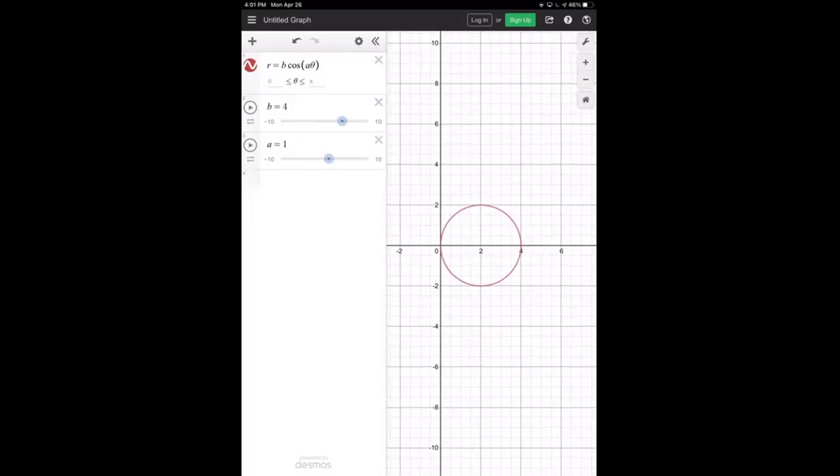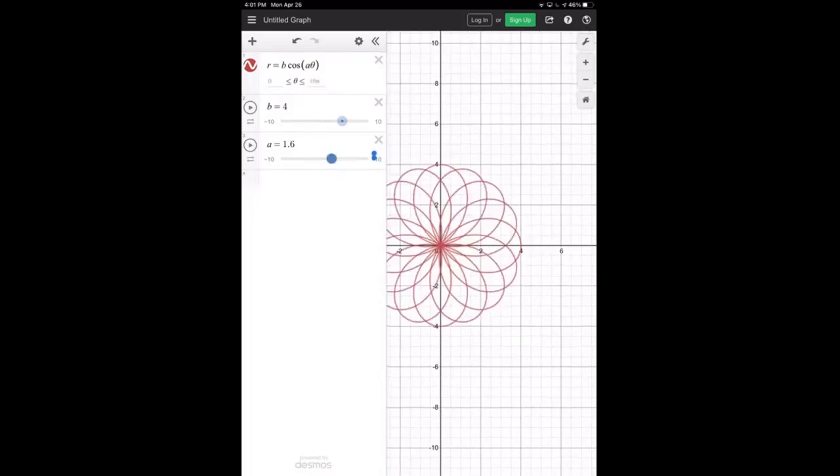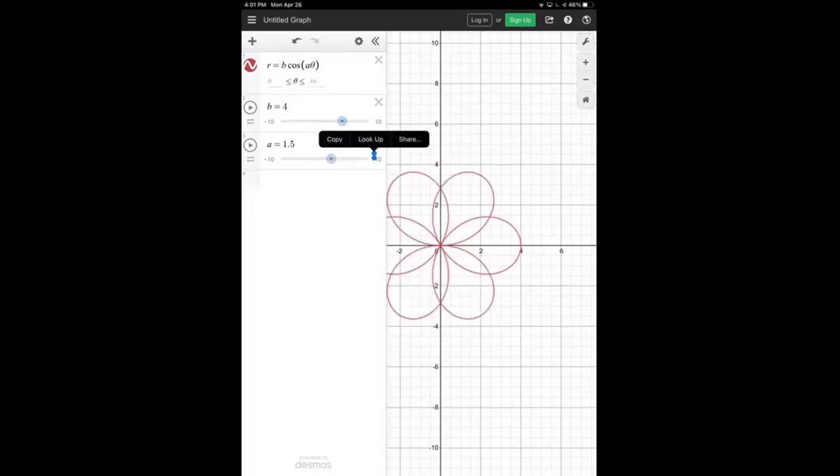We should only plug in whole numbers for A. Decimal values create really interesting, rich looking curves, but nothing that we need to be concerned with in this course right now. For instance, that's pretty neat. But notice that for decimal value, we've got these overlapping petals, right? And that that's a bit of a nuisance. So for any whole number values of A, we've got non-overlapping petals. Okay.